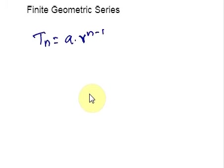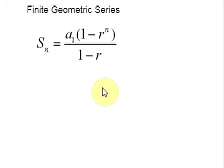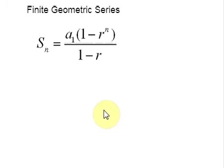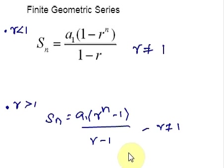Now let us see the general formula for a finite geometric series. The general formula for determining the sum is: Sn = a1 times (1 minus r raised to n) divided by (1 minus r), where r is not equal to 1. This formula is easier to use when r is less than 1. There is also an alternate formula which can be used when r is greater than 1. Both formulas are very similar — only the position is different.